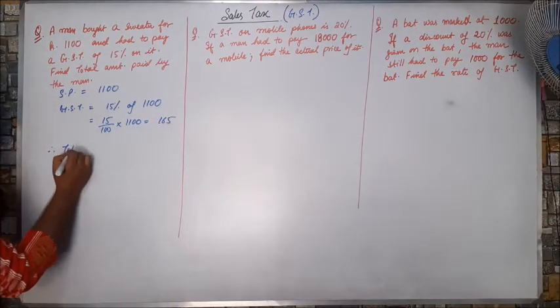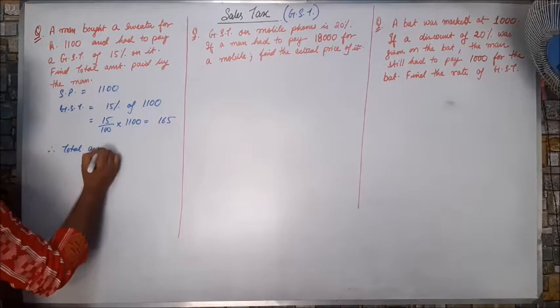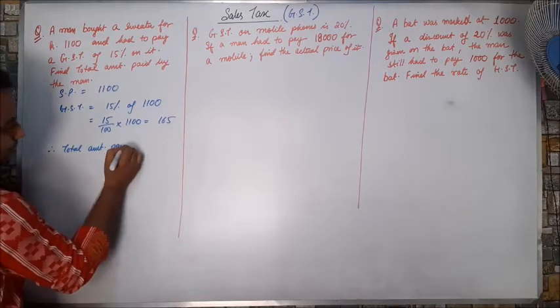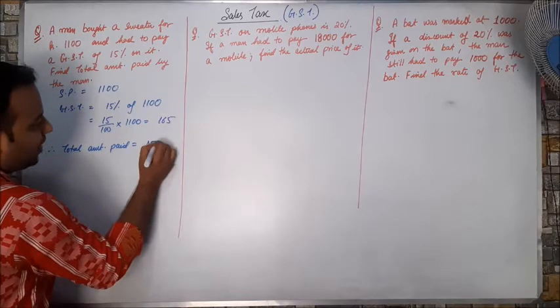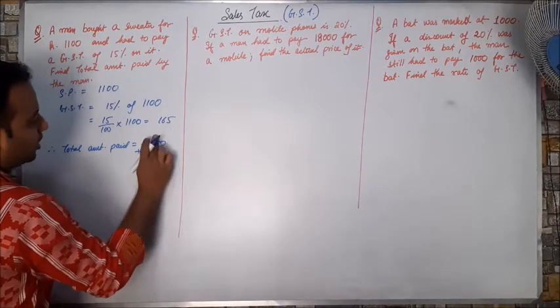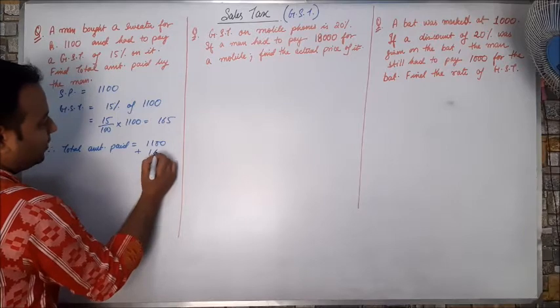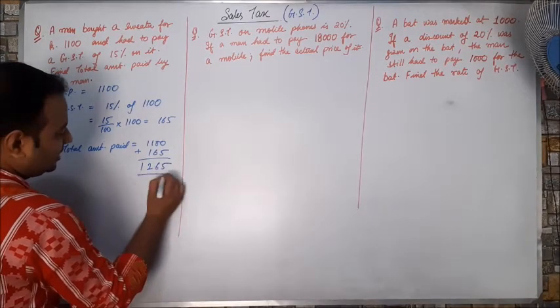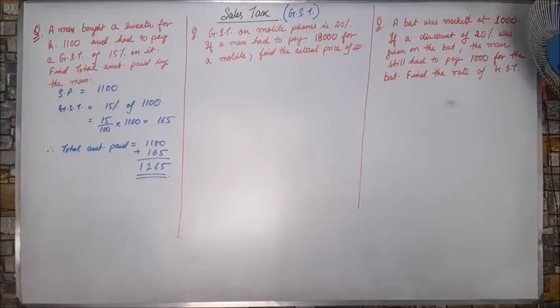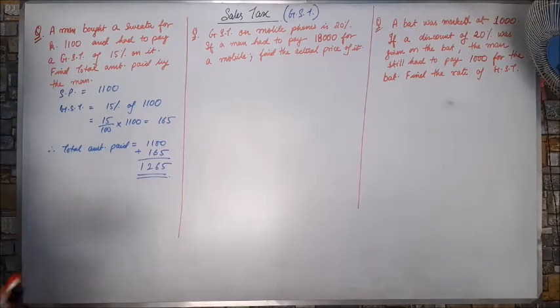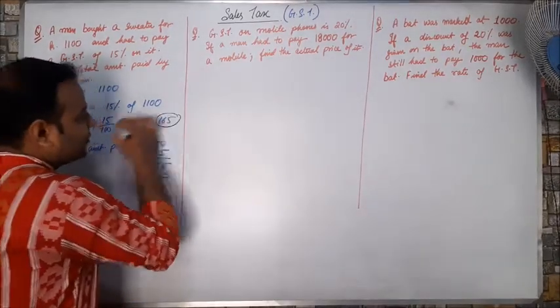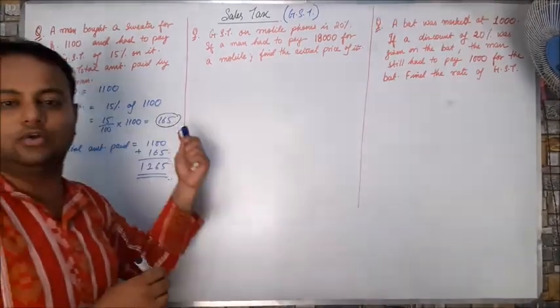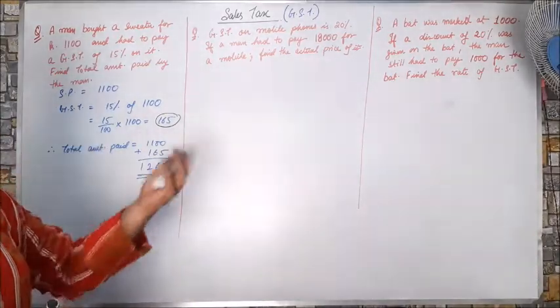The GST was 15% of 1100. That is equals to 15 by 100 into 1100. That is equals to 165. So therefore, the total amount paid, it will be 1100 plus 165 that is equals to 1265. This is the total amount that has to be paid by the man for the sweater. This amount extra will be sent to the government as a tax.